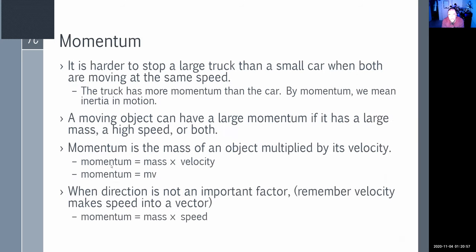It's harder to stop a large truck than a small car, even when both are moving at the same speed — the truck just has more momentum. Momentum is a kind of dynamic inertia: the inability to change motion. A moving object can have large momentum if it has a large mass, high speed, or both.